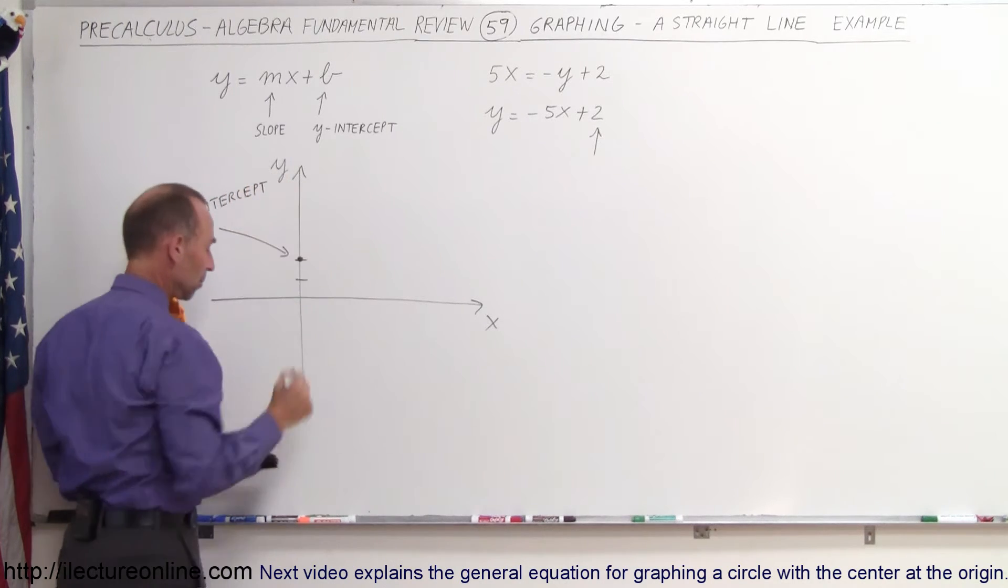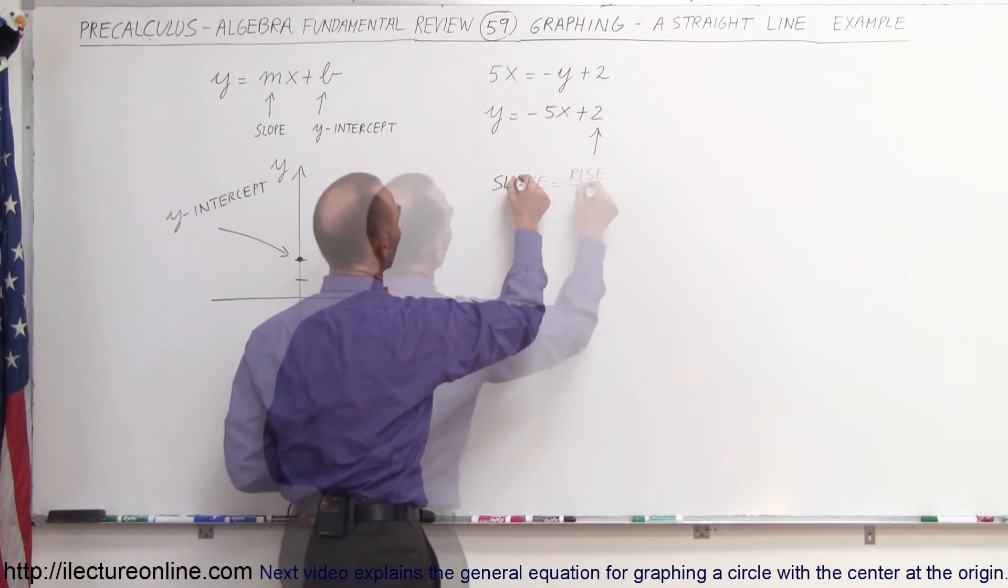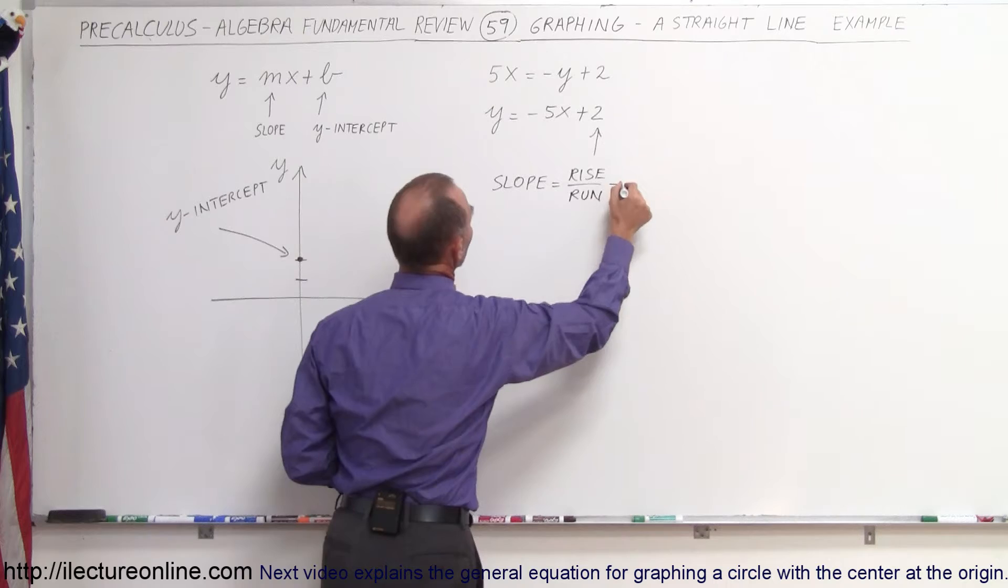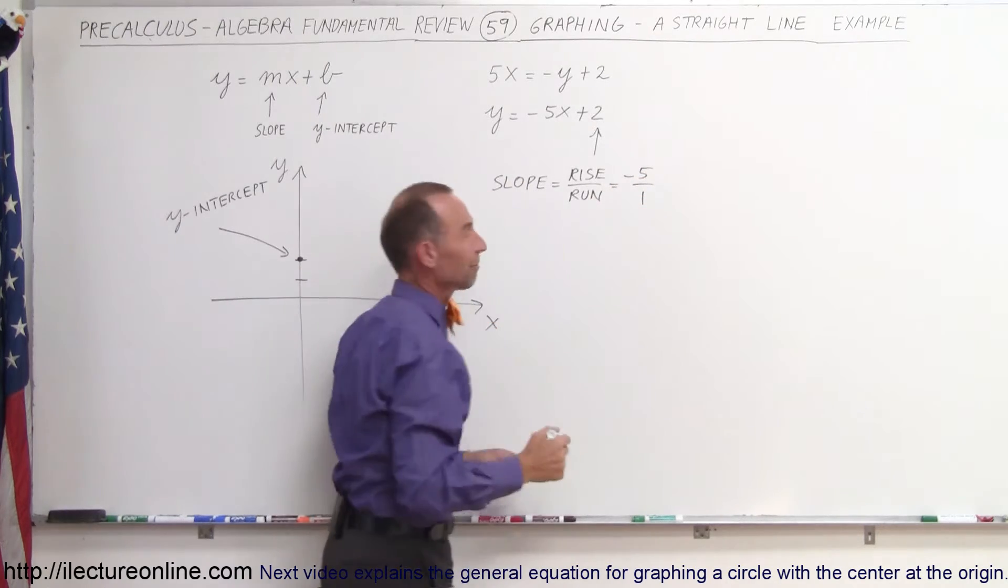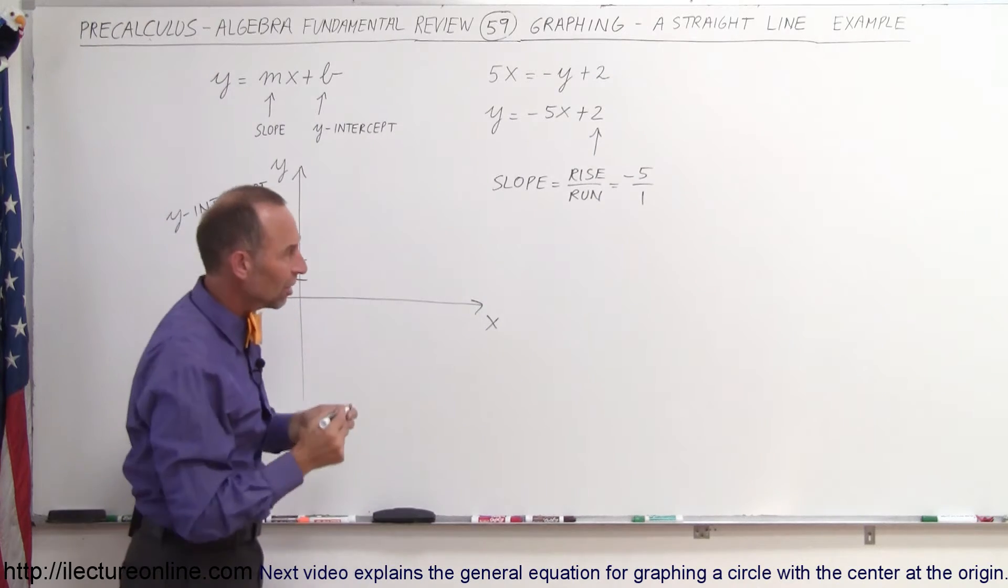Now we want to find the slope. Remember, the slope by definition is the rise divided by the run. In this case it is equal to minus 5, and it's better to write as minus 5 over 1. If it's not already a fraction, just turn it into a fraction, which makes it easier.